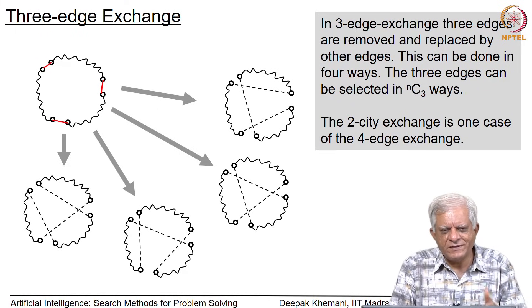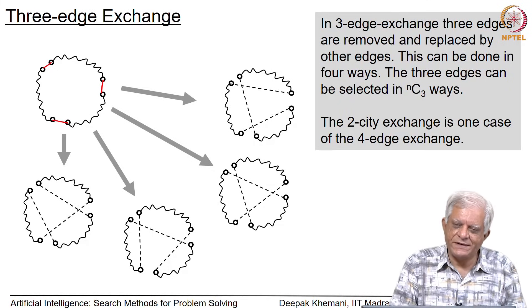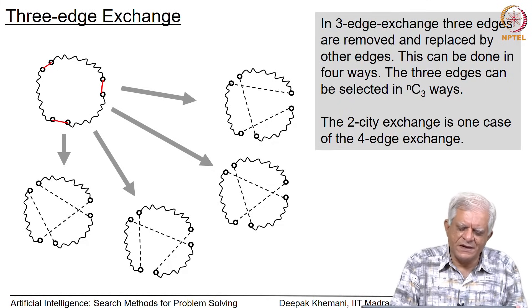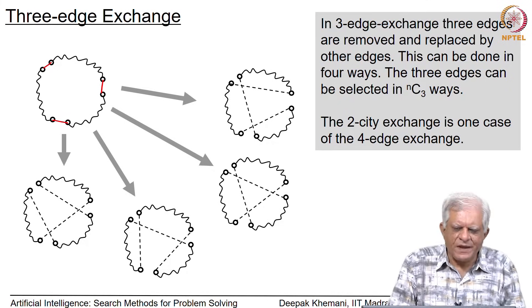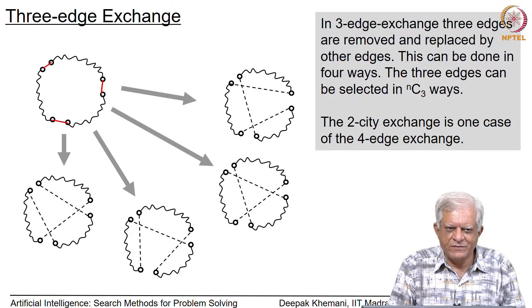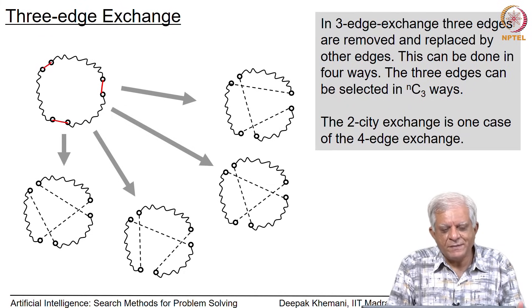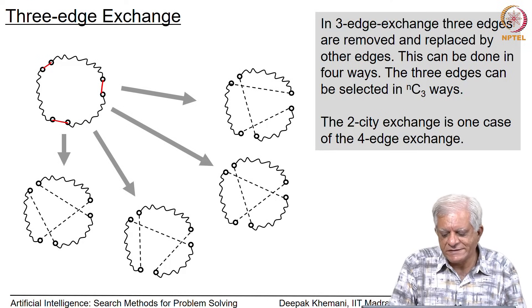Even in TSP you could use an algorithm like variable neighborhood descent. Typically you might start with some greedy algorithm to get an initial tour and then apply one of these perturbation operators to try to get better tours.